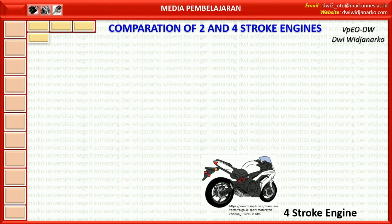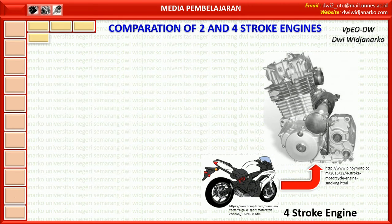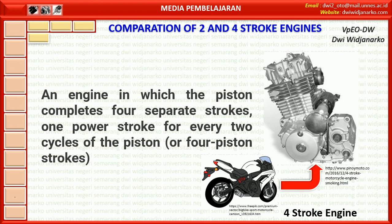A 4 stroke engine is an internal combustion engine in which the piston completes 4 separate strokes while turning the crankshaft. Each equates to 1 full stroke of the piston. Therefore, it supplies 1 power stroke for every 2 cycles of the piston, or 4 piston strokes, and a complete cycle requires 2 revolutions of the crankshaft.